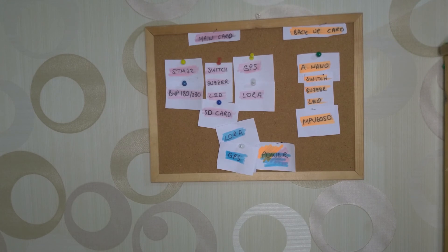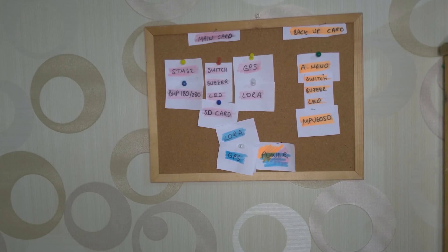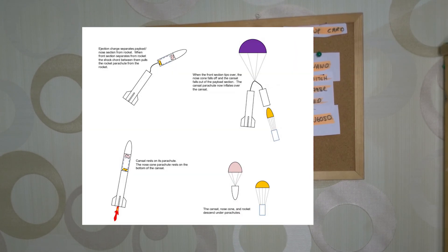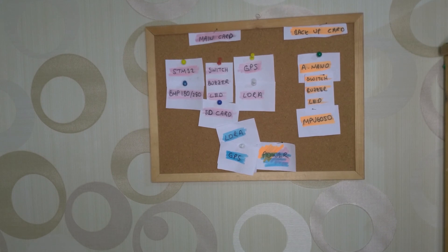The blue things on the board are GPS and communication modules added for the payload. The competition requires us to find the payload, so we need to see the payload's coordinates on the ground station, which means GPS, a communication module, and power are added to the payloads. The payload will be at a different place from the rocket because we have two parachutes — one for the rocket body and one for the payload. We're competing at medium altitude, with a target of 10,000 feet, and must maintain communication between 3 and 5 kilometers.